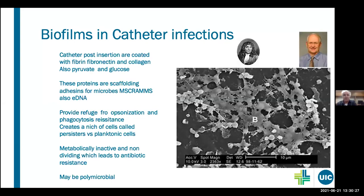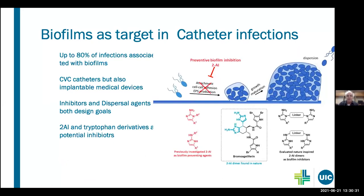These biofilms are polymicrobial. Up to 80% of infections of medical devices are associated with biofilm formation — CVC catheters, but also implantable medical devices like pacemakers and gastric pacemakers are all prone to biofilm development. There are autoinducer compounds — some, like bromogalliferin, isolated from sponges — that prevent bacteria from adhering to a biofilm and growing or maturing within it. So there are control measures being used to find drugs that prevent the attachment and formation of biofilms.